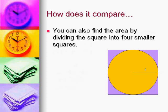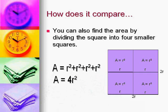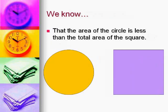You can also find the area by dividing the square into four smaller squares. Take it, chop it up into four equal squares, and that one radius makes up four equally sized squares all at r². So r² + r² + r² + r² equals 4r².